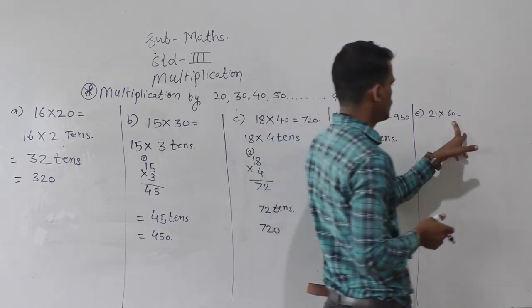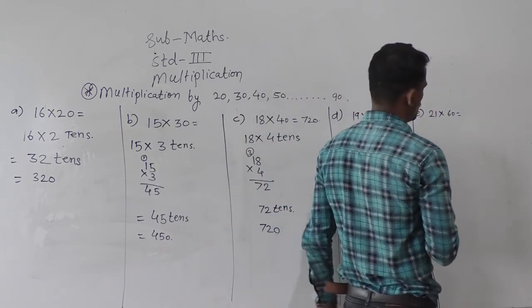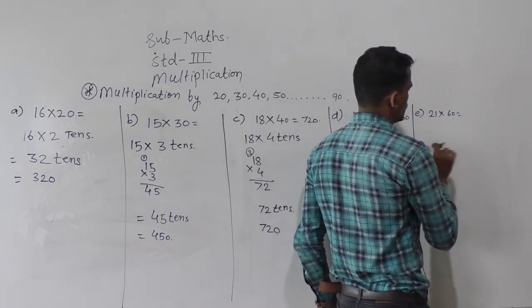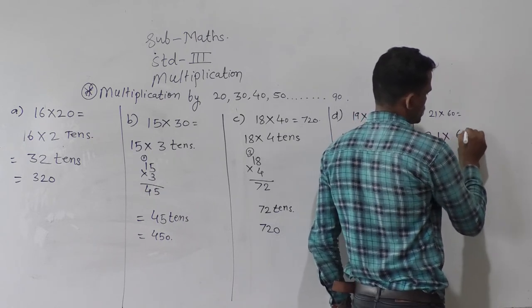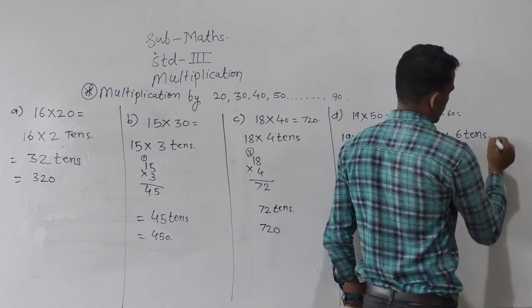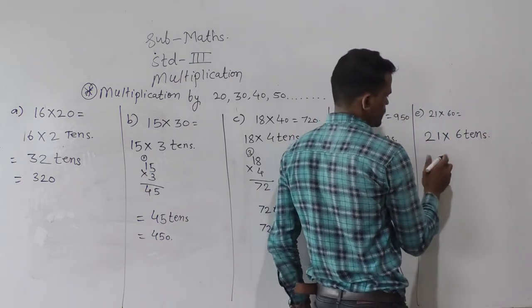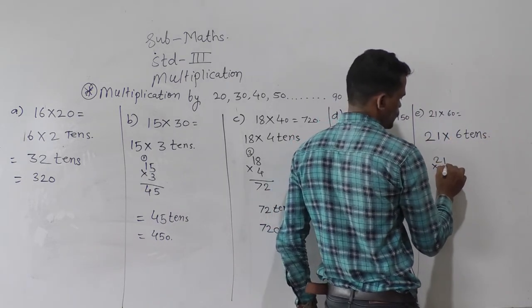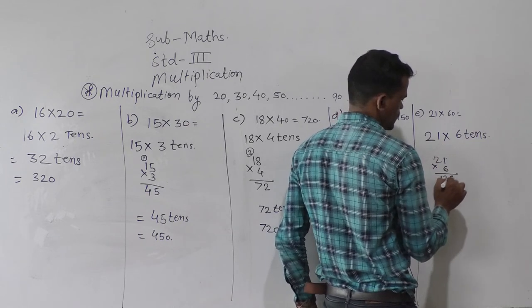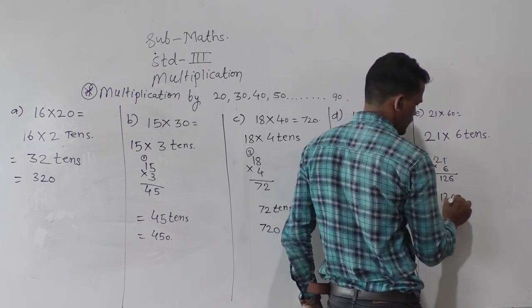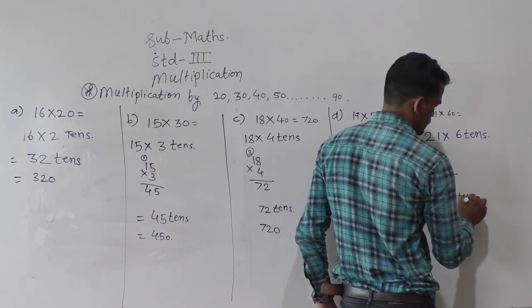Then next 21 into 60. So write here 21 into 6 tens. So do this multiplication 21 into 6. 6 ones are 6, 6 twos are 12. So 126 tens.